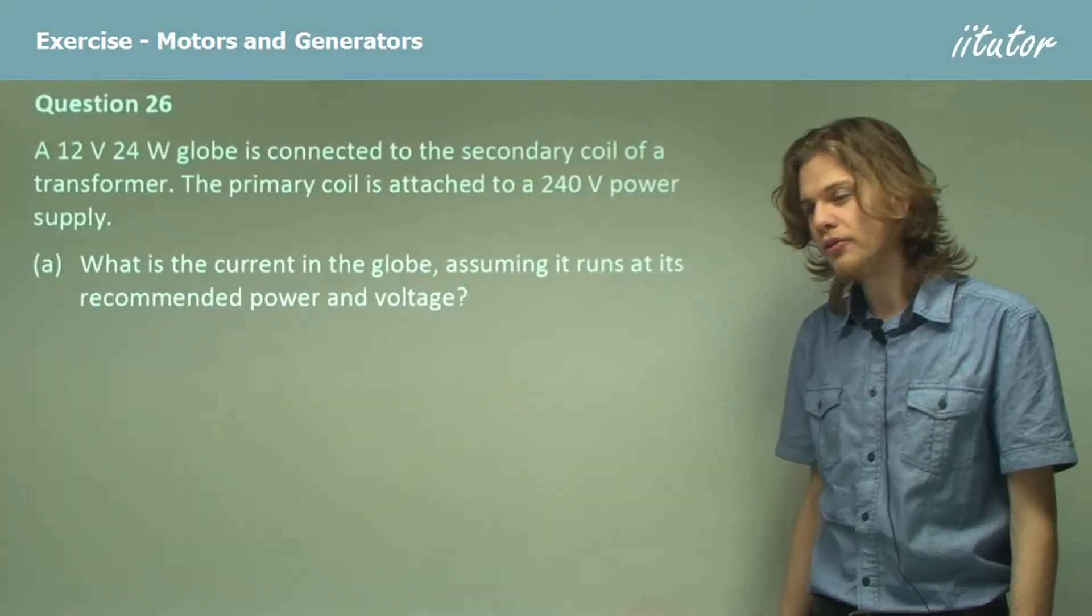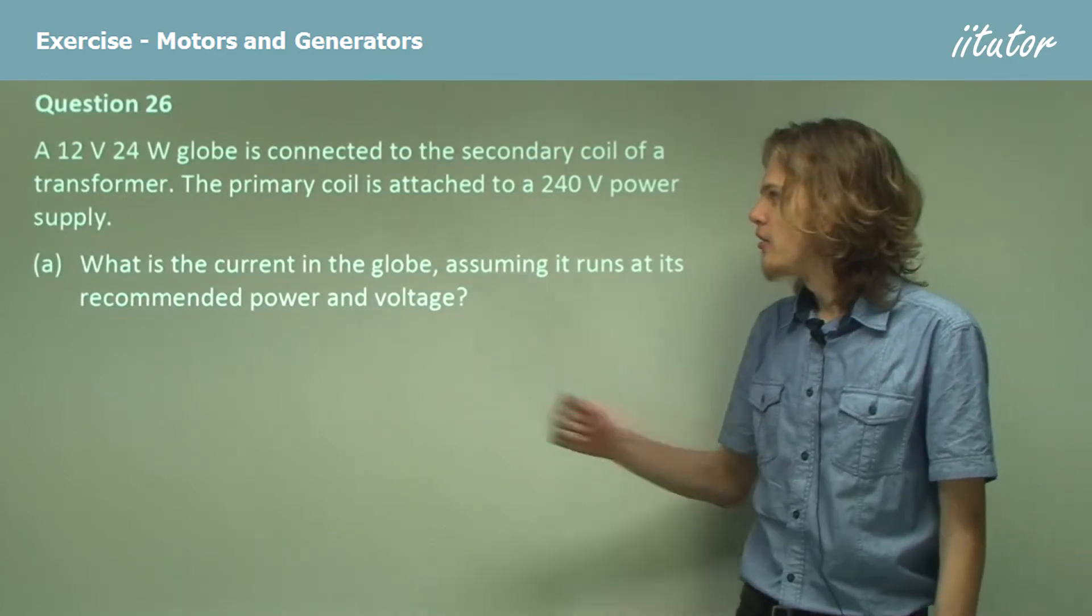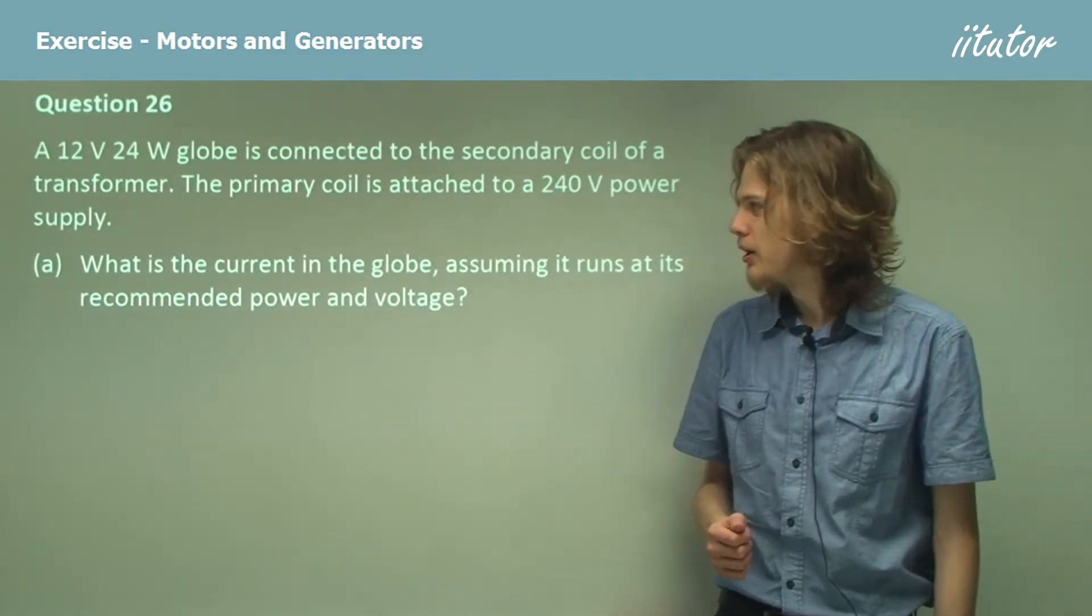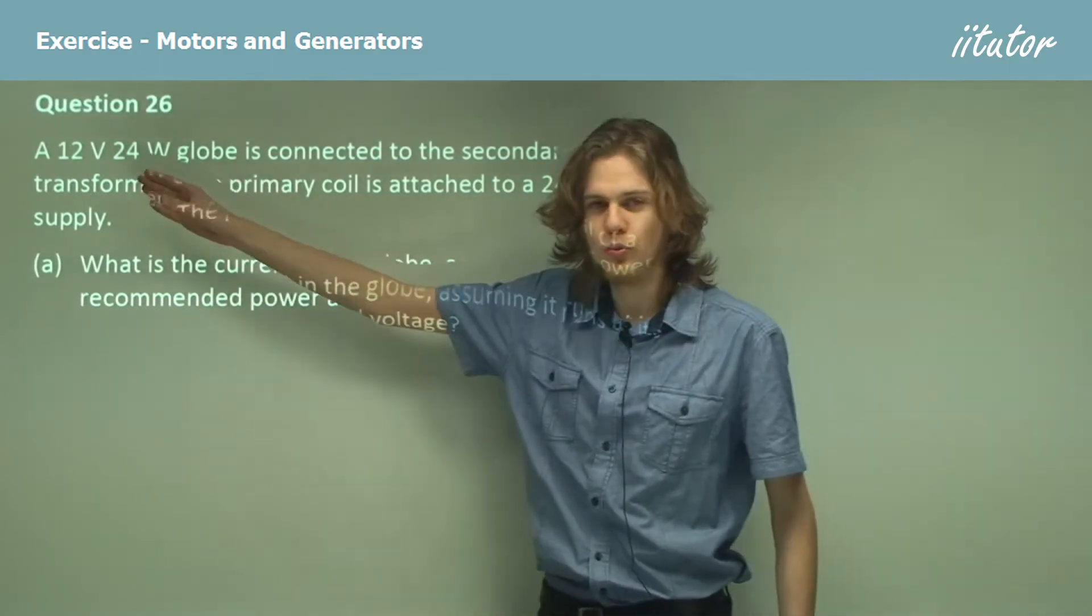A 12 volt, 24 watt globe is connected to the secondary coil of a transformer. The primary coil is attached to a 240 volt power supply. What is the current through the globe assuming that it operates at 12 volts and 24 watts?